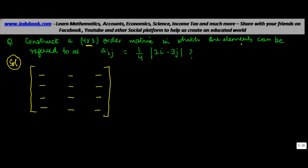Each of these values are the elements of the matrix, and each element can be referred to as a_ij = (1/4)|2i - 3j|. Now, what do you mean by i and j here? When you write a position in a standard matrix, you write it as a_11. This means the element a is in the first row and first column — the first value represents the row and the second value represents the column.